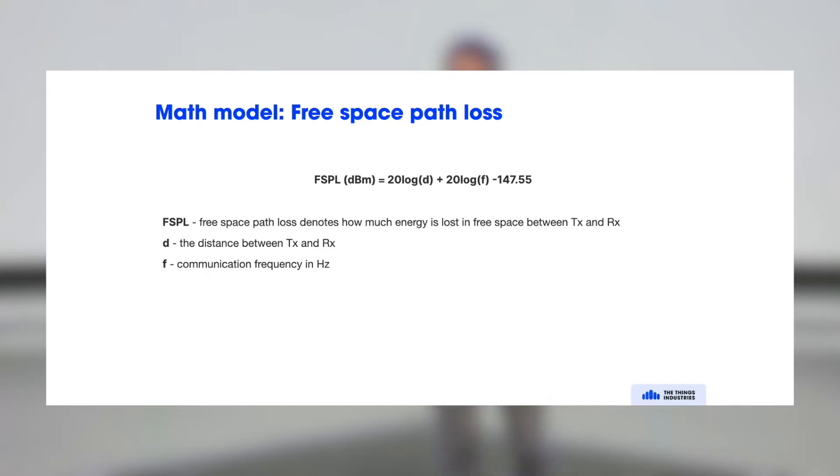And this is also why a lower frequency sub-gigahertz communication is longer range than a higher frequency. So only because of the frequency, the range is longer because it's sub-gigahertz as compared to WiFi or Bluetooth, which operate typically in 2.4 and 5 gigahertz.